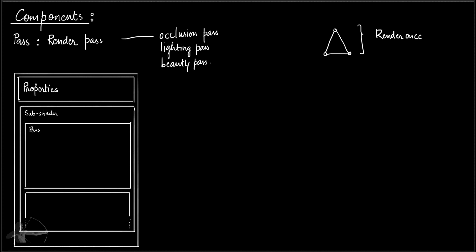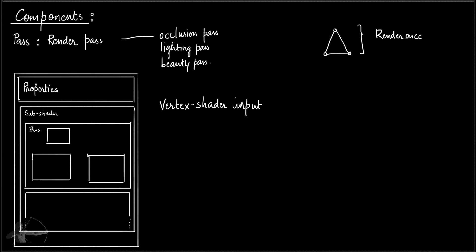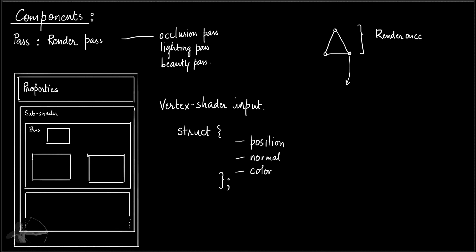Inside a pass, we have vertex shaders and then pixel shaders. To provide input to a vertex shader, we have a packet called vertex shader input. This is a set of information read from the vertices of the mesh — attributes such as the position, normal, and color of the vertex. This becomes our packet that is given to the vertex shader. The way we create this packet is by using a struct — a collection of different or similar data types grouped together in the form of a packet.